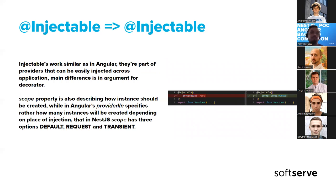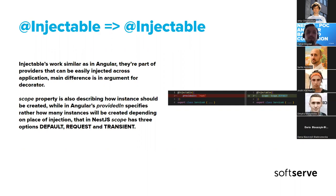Injectables haven't really changed compared to Angular. The main difference is that we have a scope property rather than the providedIn property. In NestJS every provider or service is shared across the application by default. We can change this by creating a special scope — for example, a request scope, where a new instance of the service is created for every request. There's also a transient option, which is out of scope for this presentation and is more dedicated to creating a service per consumer.